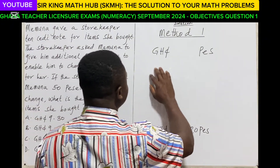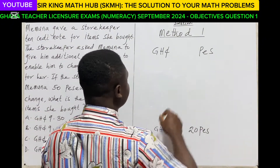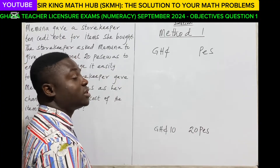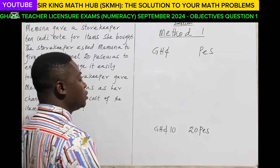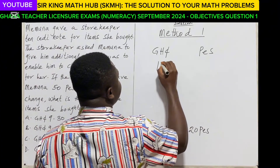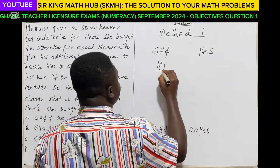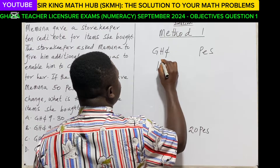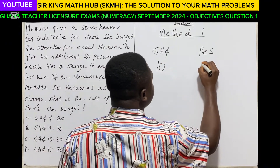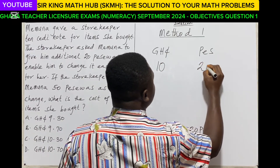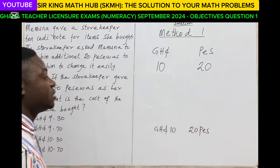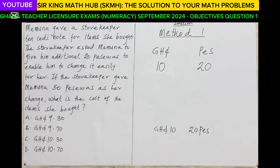So how do you represent the 20 pesewas in the cedis and pesewas column? You place the 10 in the cedis column and place 20 in the pesewas column. Now, if the storekeeper gave Memuna 50 pesewas as a change, what is the cost of items she bought?